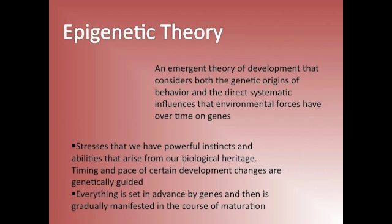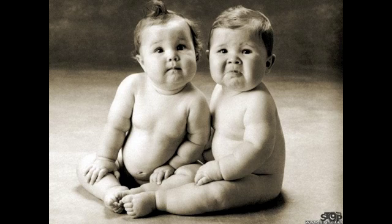Everything is set in advance by genes and then is gradually manifested in the course of maturation. We all know that the conditions you face while in the womb have a great effect on your life. It turns out, this never stops. Even in late adulthood, a change in an atmosphere can affect the way we alter or develop. Many studies have been done specifically on identical twins to justify this theory.